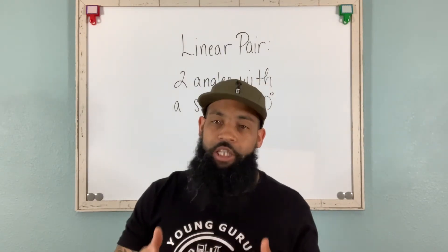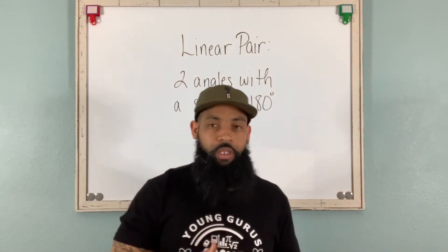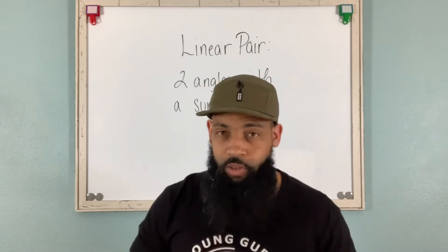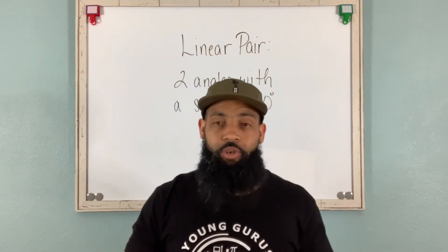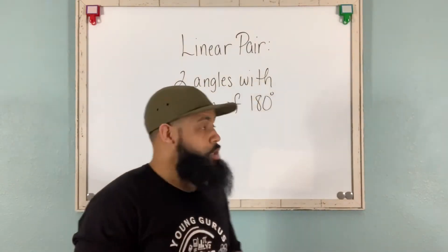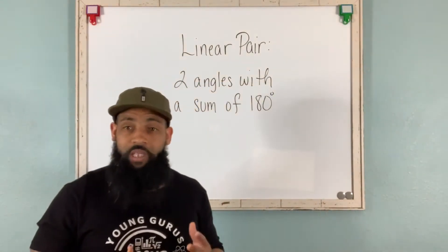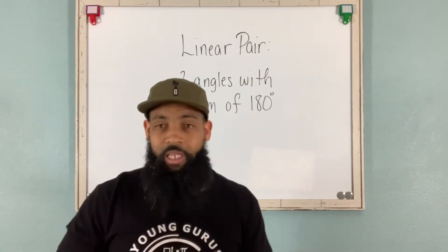Specifically, we're talking about linear pair. So now what do you think of when you think of the word pair? We think of two. So it doesn't matter what two items it is, but anytime we're talking about a pair, we're talking about two items. So a linear pair are, as you can see, two angles with a sum of 180 degrees. Let's do some examples.